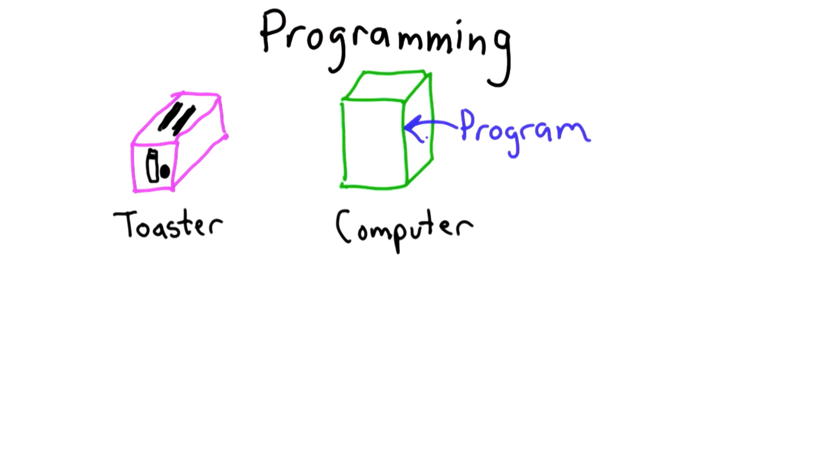What the program needs to be is a very precise sequence of steps. The computer by itself doesn't know how to do anything. It has a few simple instructions that it can execute. To make a program do something useful, we need to put those instructions together in a way that does what we want.